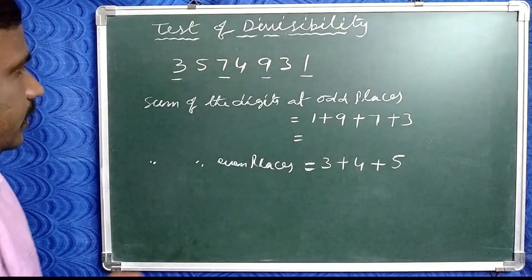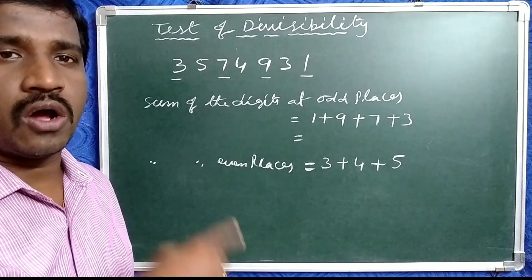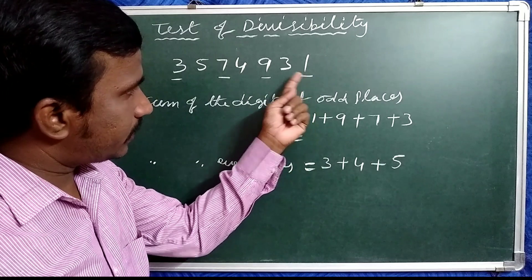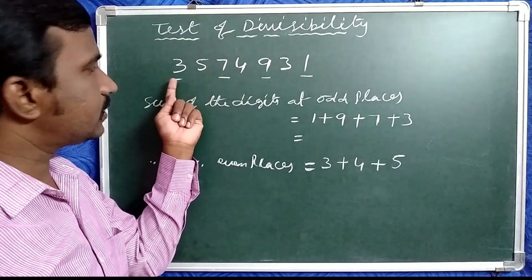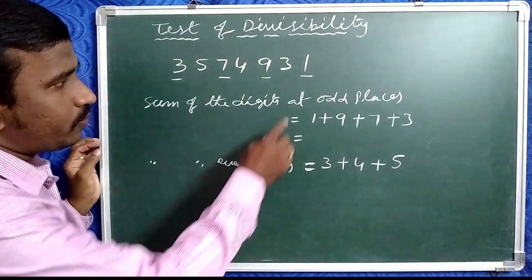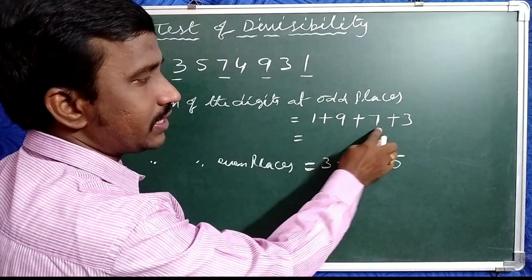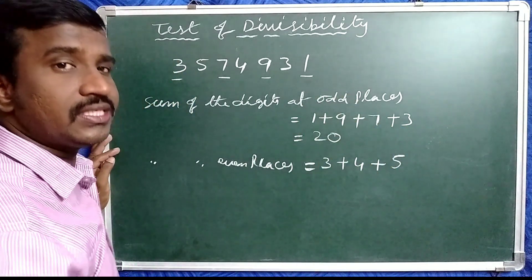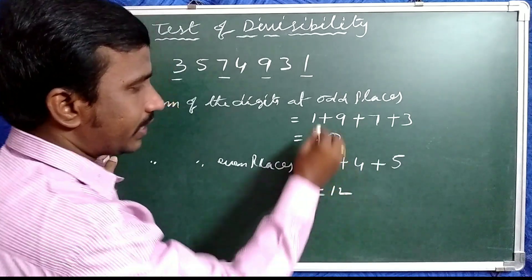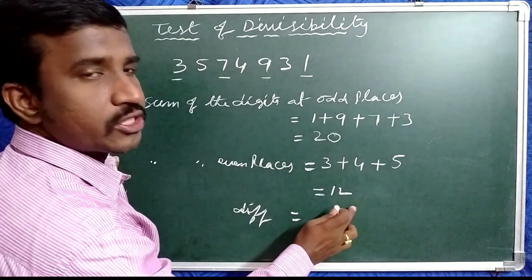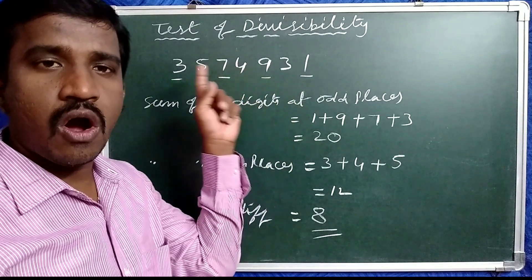Now observe one more example. Given number: 3, 5, 7, 4, 9, 3. Check whether this is exactly divisible by 11 or not. Take the odd places — 1st, 3rd, 5th, and 7th place digits — and add them: 1 plus 9 plus 7 plus 3 equals 20. The even place digits are 3, plus 4, plus 5 equals 12. The difference is 20 minus 12 equals 8. Since 8 is not divisible by 11, this given number is not divisible by 11.